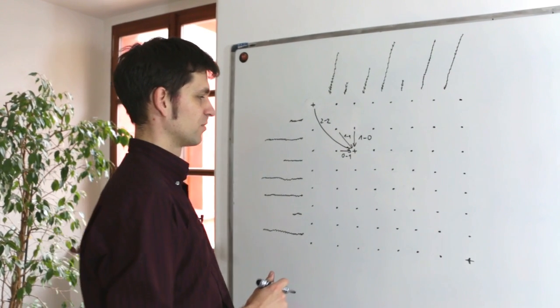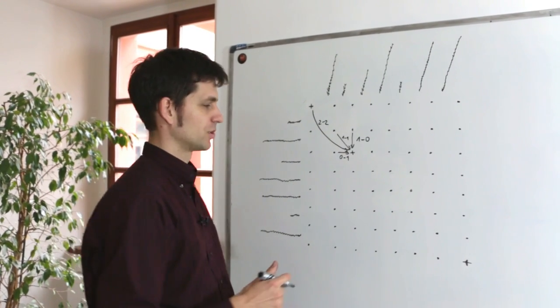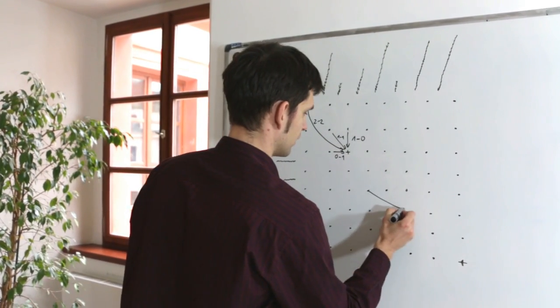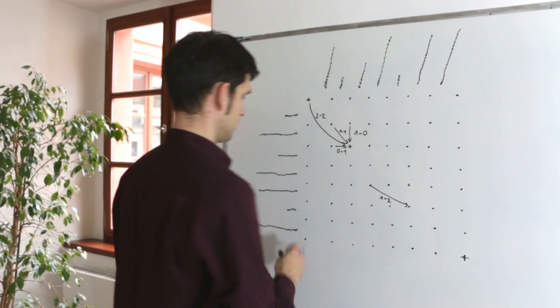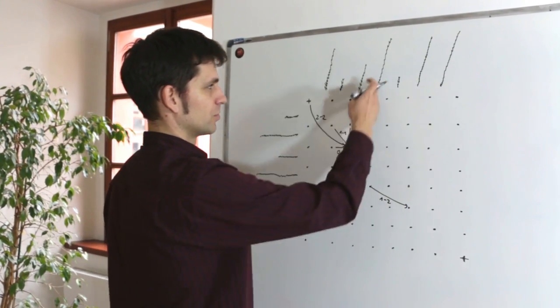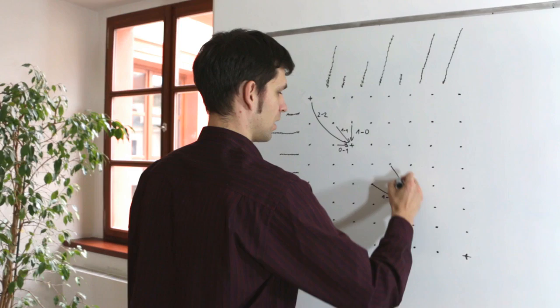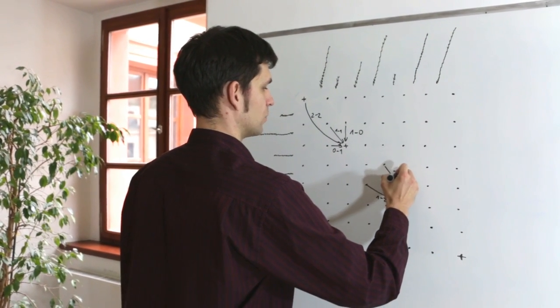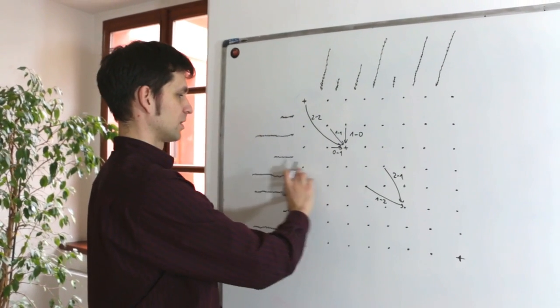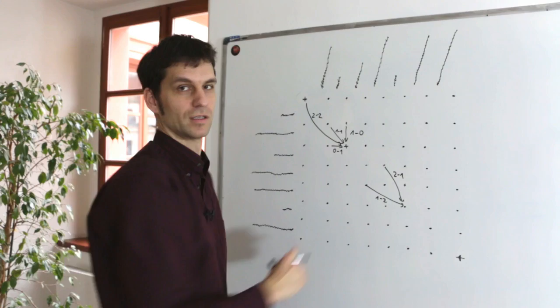There are two other types of moves allowed by the Gale-Church algorithm. One of them is one to two alignment. So consuming one sentence in the source and producing two in the target. And the other is two to one consuming two sentences in the source and producing one in the target.